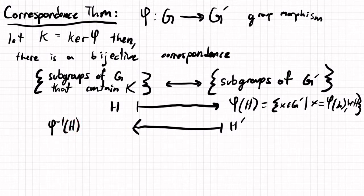And that'll give us all of the pre-images of elements in H. And what the correspondence theorem says is that this will be a subgroup of G, and it will contain k.